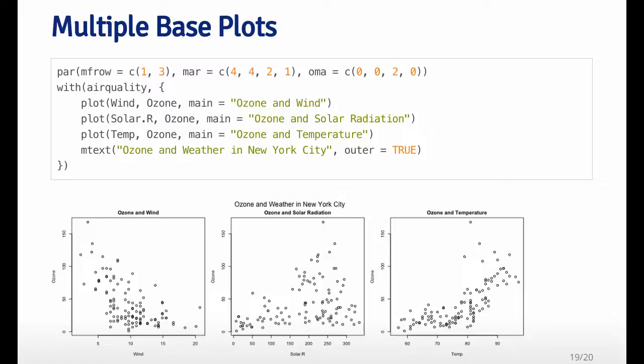Now, you can see that when I use multiple plots, I have a title on each plot, so it tells me what the two variables are. The first one's ozone and wind, the second one's ozone and solar radiation, and the third one here is ozone and temperature. But then sometimes you want to have a label that's covering the entire panel of plots, and so that's what the outer margin is for.